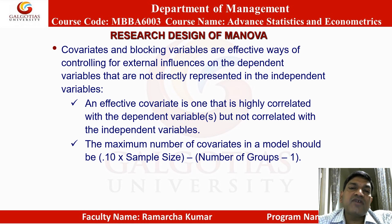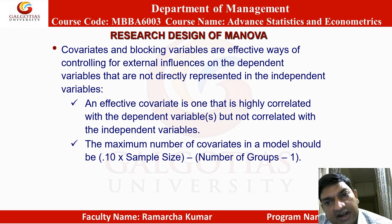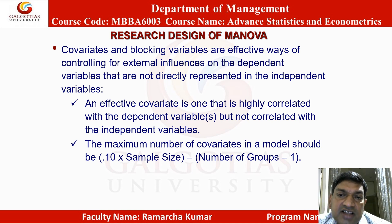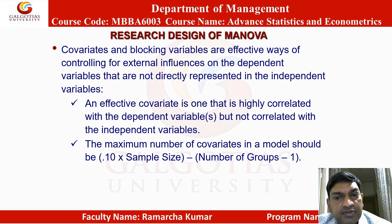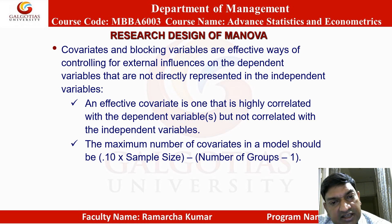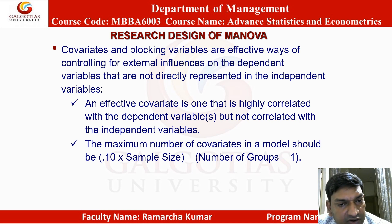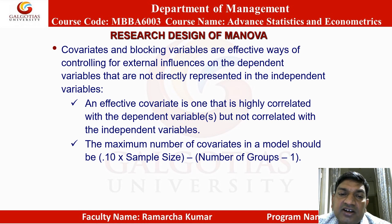Covariate and blocking variables are effective ways of controlling for external influences on the dependent variables. An effective covariate is highly correlated with the dependent variable but not correlated with the independent variable. The maximum number of covariates in a model should be 0.10 × (sample size − number of groups − 1). For example, with 6 groups and a sample size of 100: 0.10 × 100 = 10, minus 5 equals 5, so the maximum number of covariates is 5.